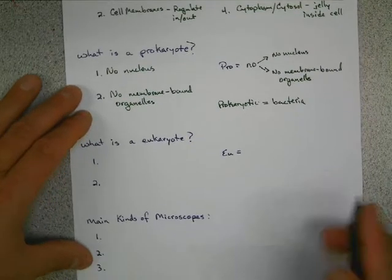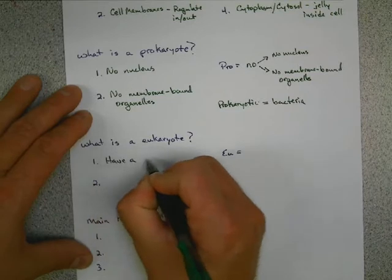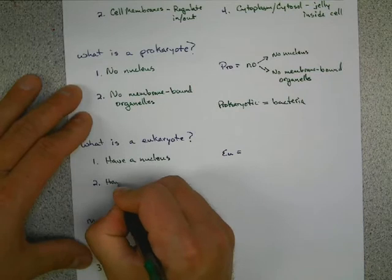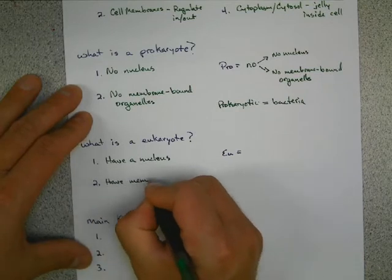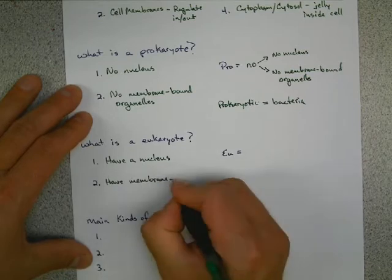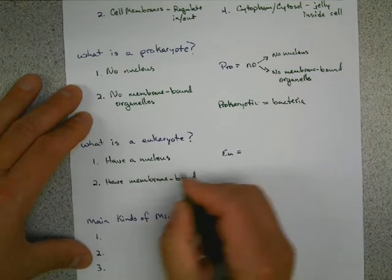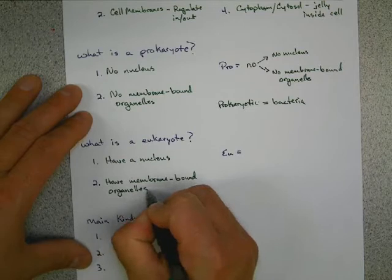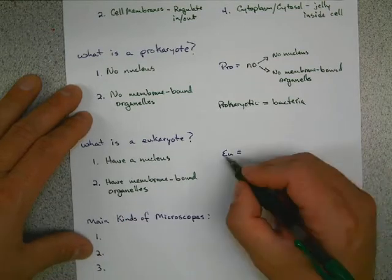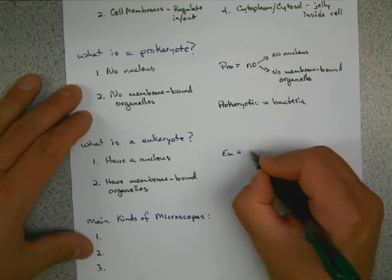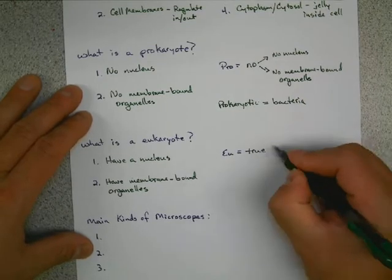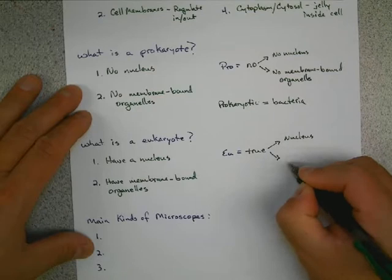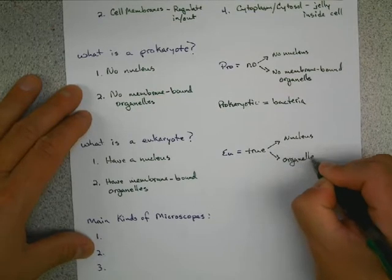Eukaryotic cells are just the opposite. They have a nucleus. And they have membrane-bound organelles like the mitochondria. If you're a plant, you'll have a chloroplast. You'll have your smooth and rough ERs. You'll have your Golgi bodies. You'll have lysosomes and vesicles. Now a great way to remember this is U means true. And true cells have a nucleus and they have the organelles.